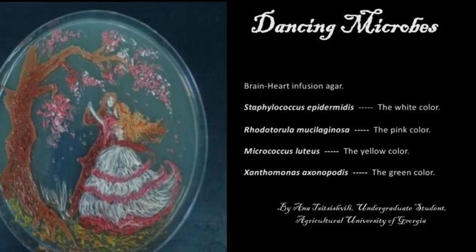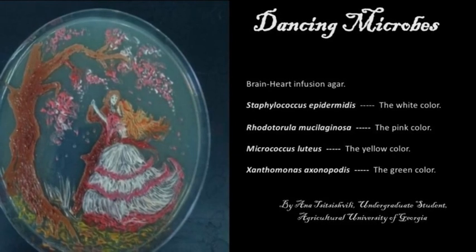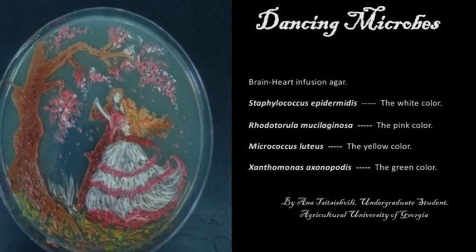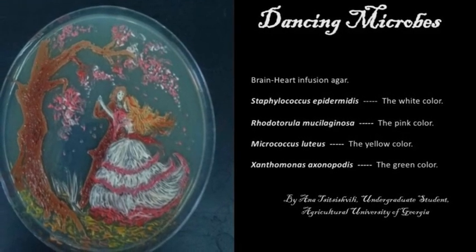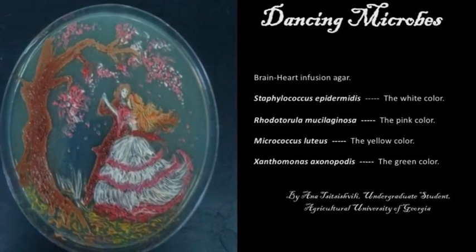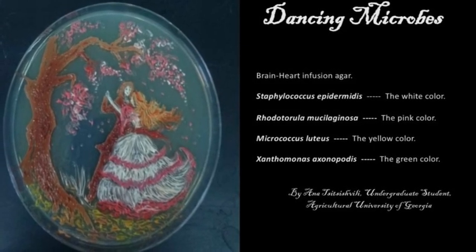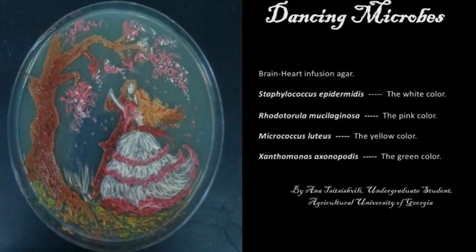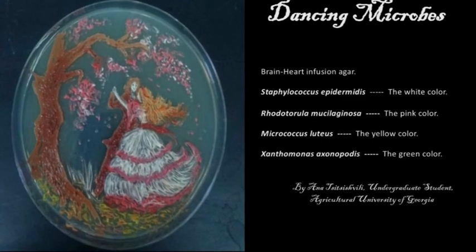Dancing Microbes. For this painting, a brain heart infusion Agar was used. The white color on the face and the dress of the girl and the boy is Staphylococcus epidermidis. The pink color of the girl's dress and the tree flowers is made by Rothia. The yellow color of the lady's hair is Micrococcus and the green color is Pseudomonas.